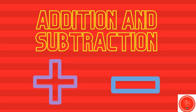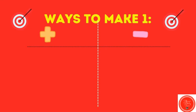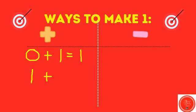Let's practice some addition and subtraction. We're going to make number sentences that equal the number one. One is our target, so we want one to always be the answer. Let's start with addition. If I start with zero, how many do I need to add to zero to get one? I need to add one. Zero plus one equals one. What if I start with the number one? If I already have one, I don't have to add anything. One plus zero equals one.